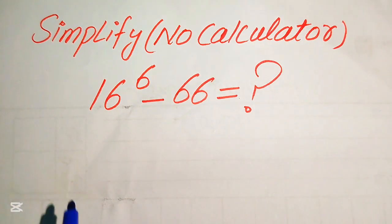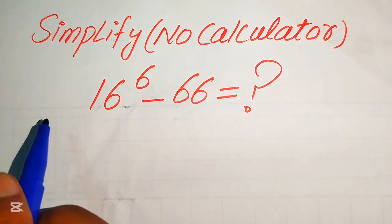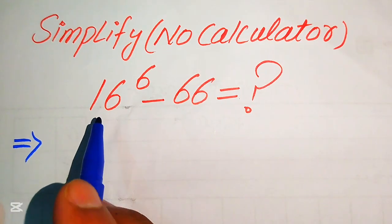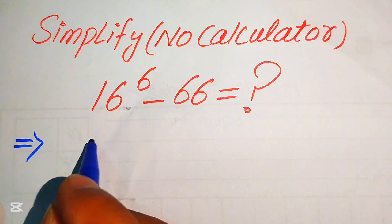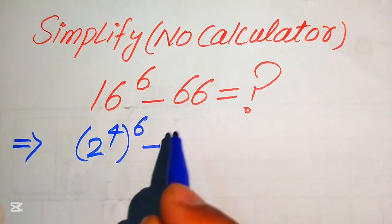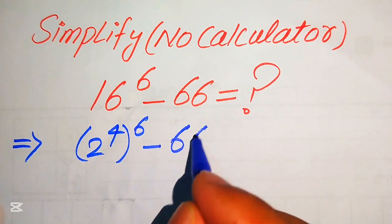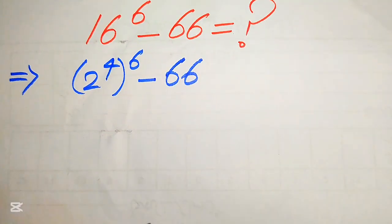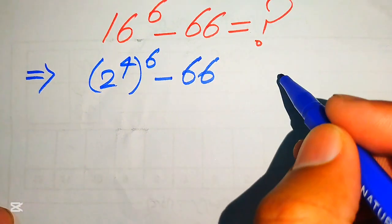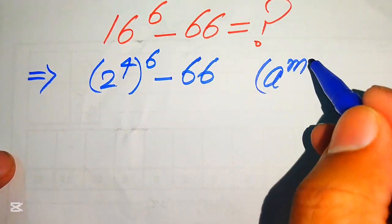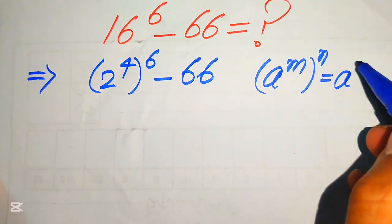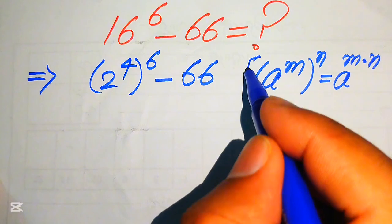The very first step is to focus on the base of this term. The base is 16, and we write 16 as 2 to the power of 4, so the expression becomes 2 to the power of 4, with its whole power 6 minus 66. Now we apply the exponent law: if you have a to the power of m to the power of n, it equals a to the power of m multiplied by n.